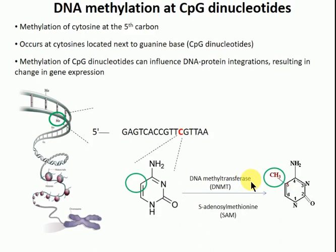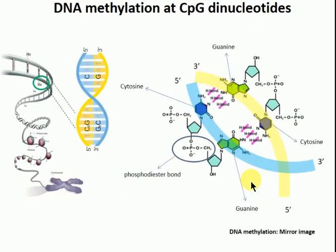This methylated cytosine hasn't actually changed the base — it hasn't caused a mutation. It's still a cytosine at that location. But what it does is change the structure of the DNA and change the occupancy, so it changes the interaction between the DNA and other elements like transcription factors. By doing that, it can impact the expression of genes.